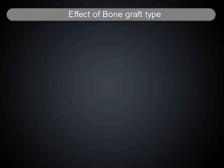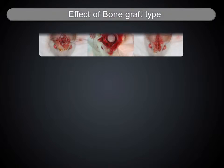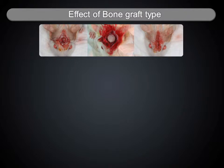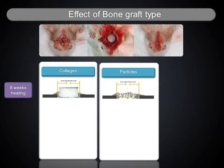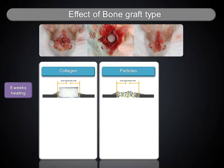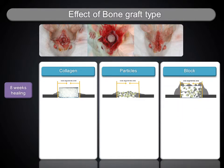The bone graft type is composed of particles and blocks. The particle type has the advantage of easy manipulation for insertion into depressed defects such as extraction sockets and maxillary sinus. The block type has the advantage of volume maintenance in vertical and horizontal augmentation.